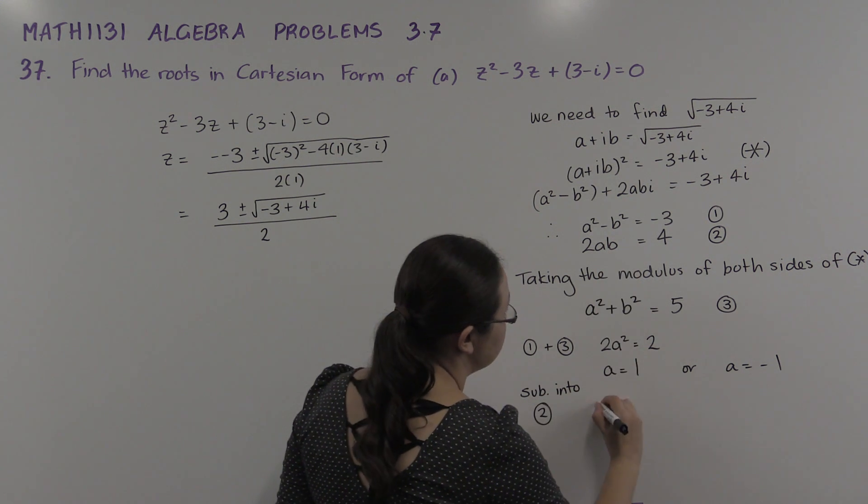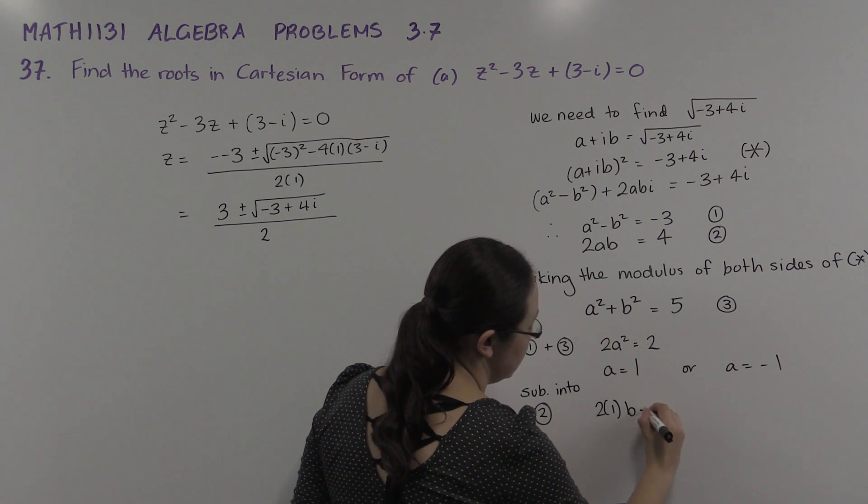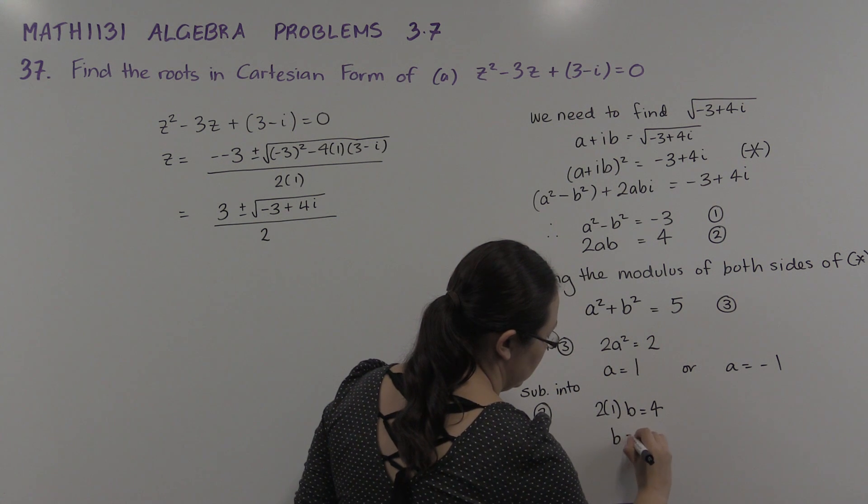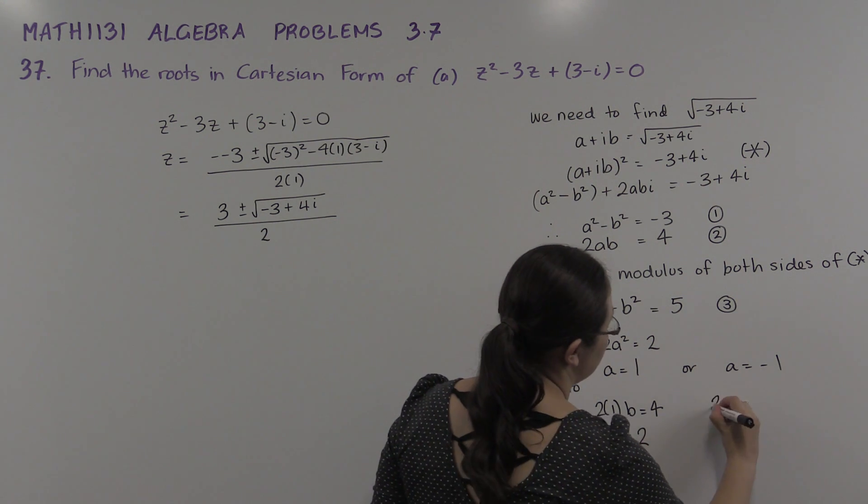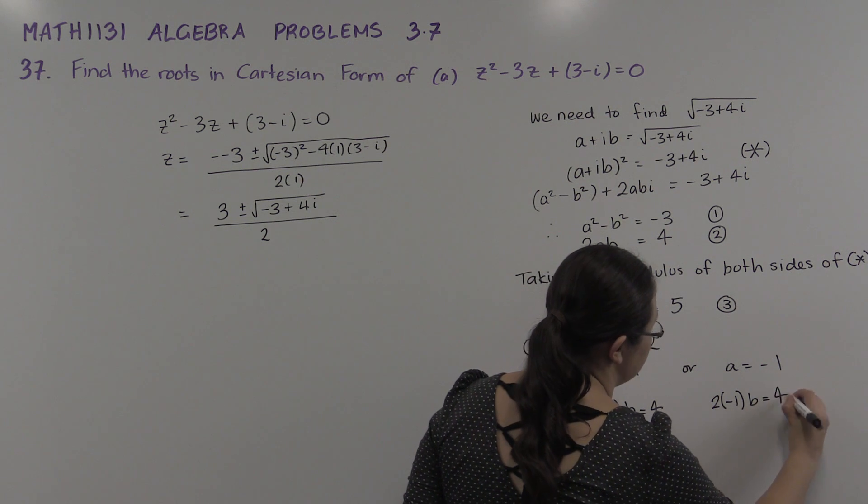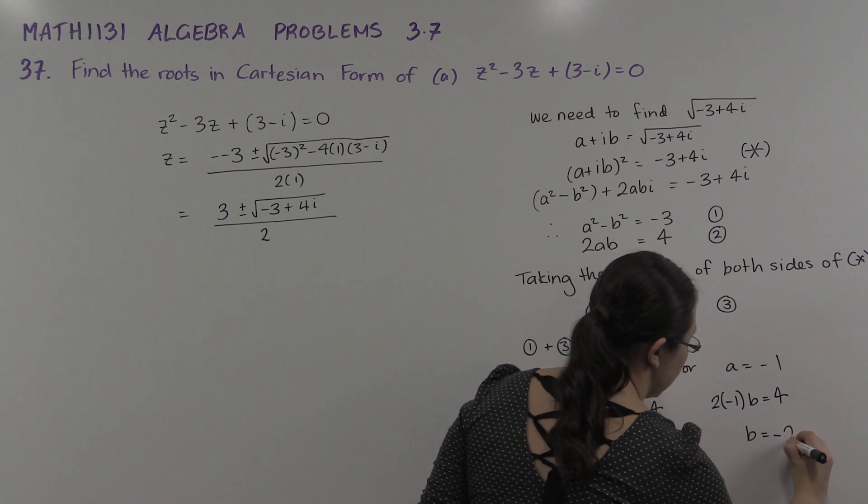So substitute into 2. And here we'll have 2 × a × b = 4, or b = 2. And here we'll have 2 × a × b = 4 again. That b will equal -2.